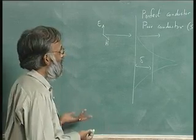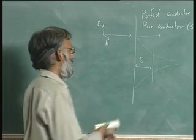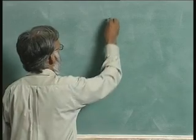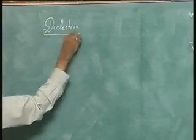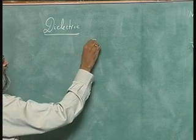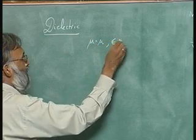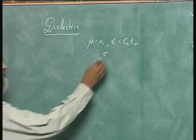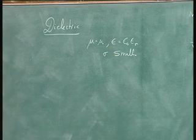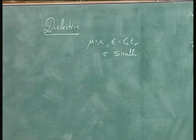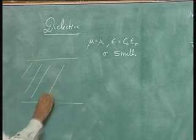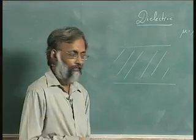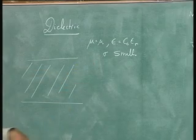I would like to generalize this to a general material. First, let us look at a dielectric — a material with μ = μ₀, ε = ε₀ εᵣ, and a small σ. This is typical for a capacitor plate with dielectric in the middle: there will be a very small leakage current, so small that the capacitor may take a day to discharge, but sigma is not zero.